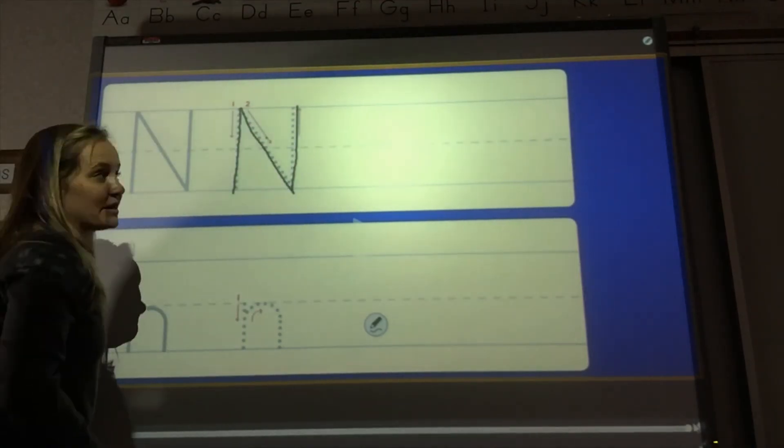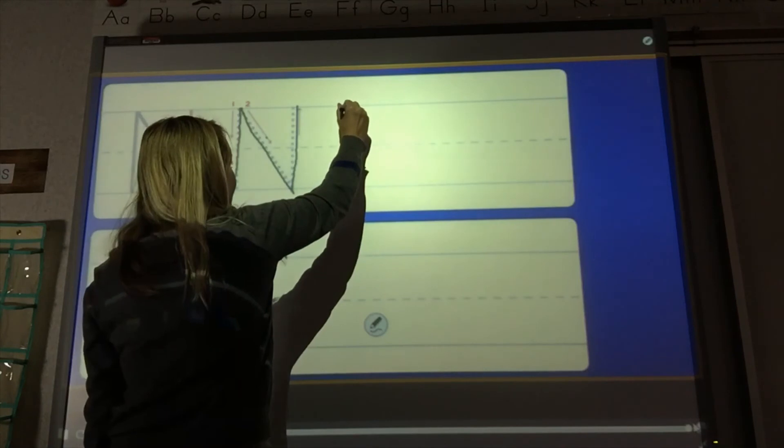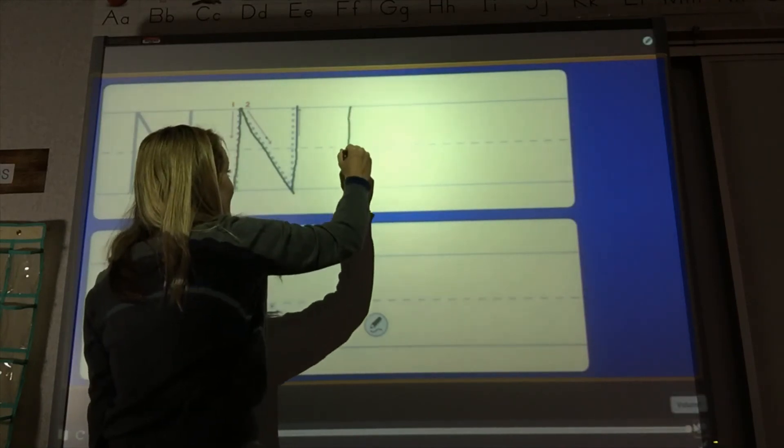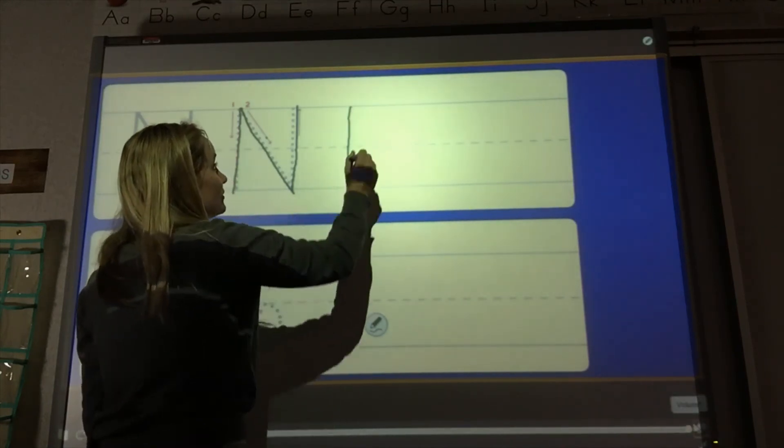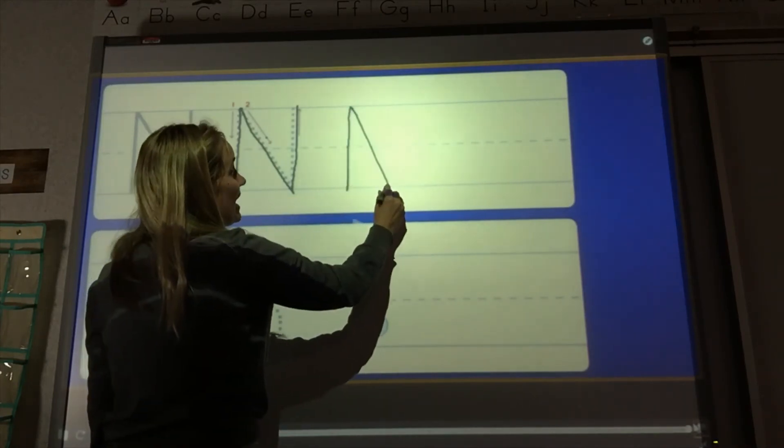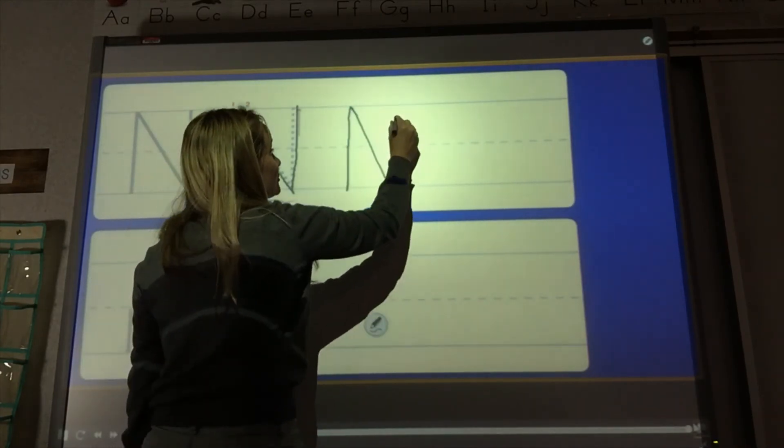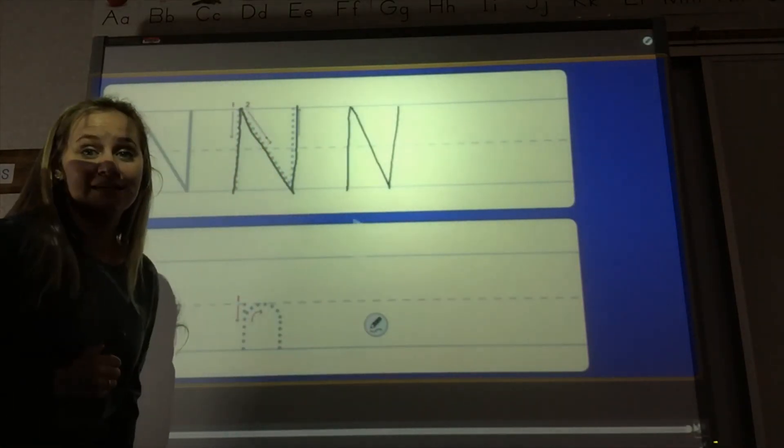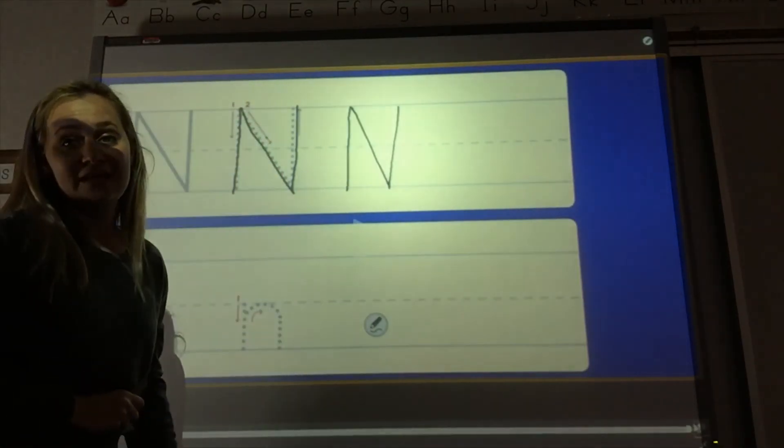Okay, let's do it again. Start from the top, make a straight line down, go back to the top, make a slant, and then another straight line from that slant. That is an uppercase N.